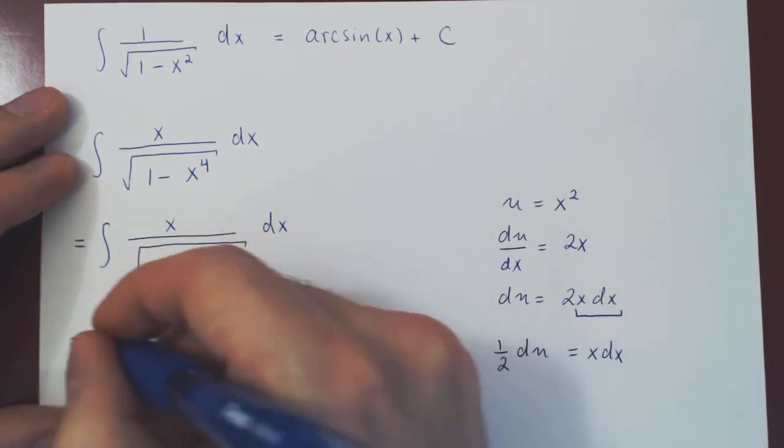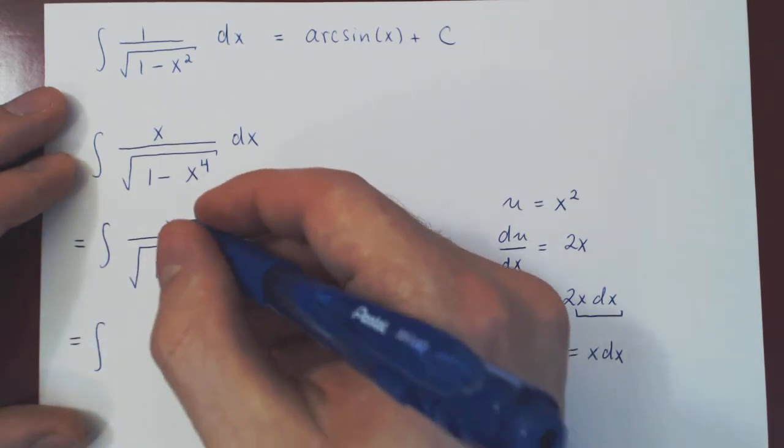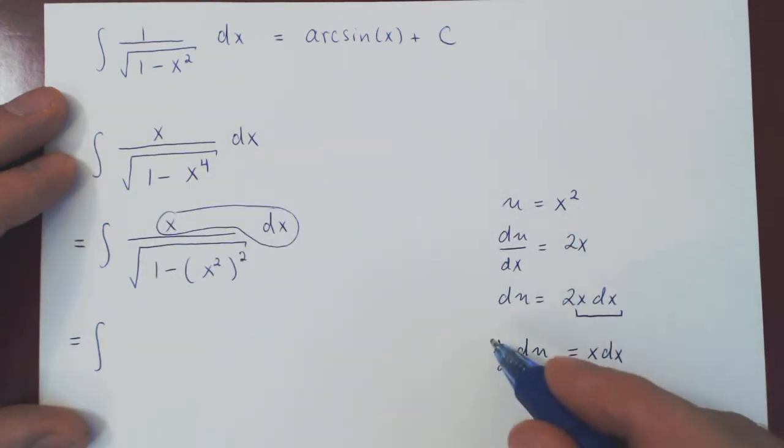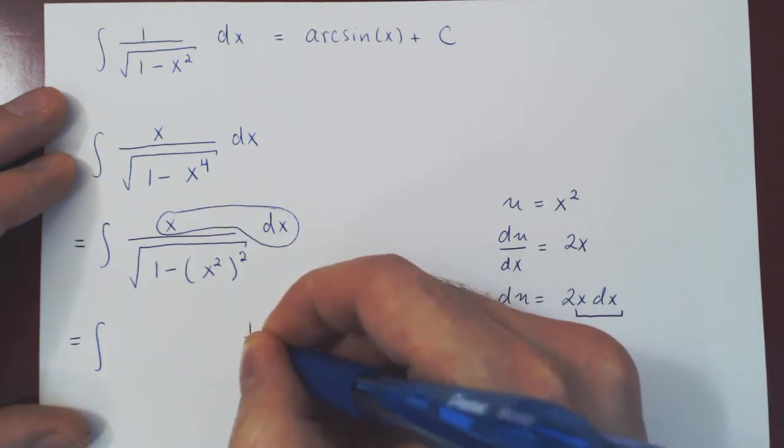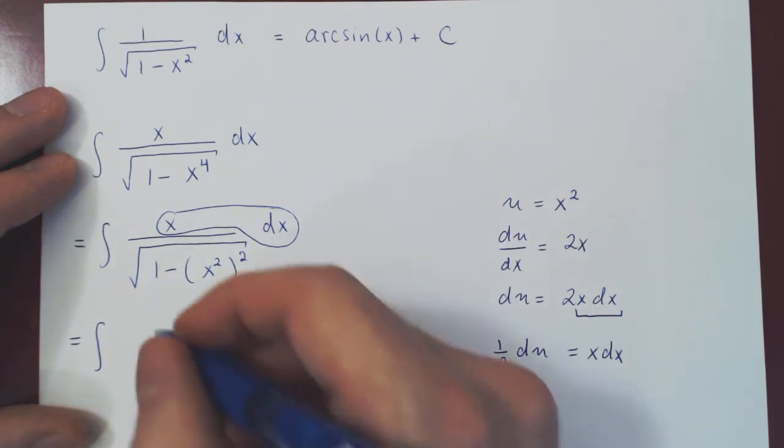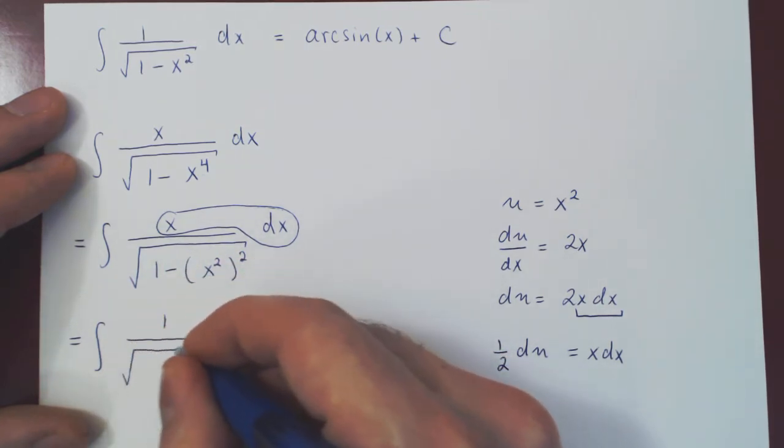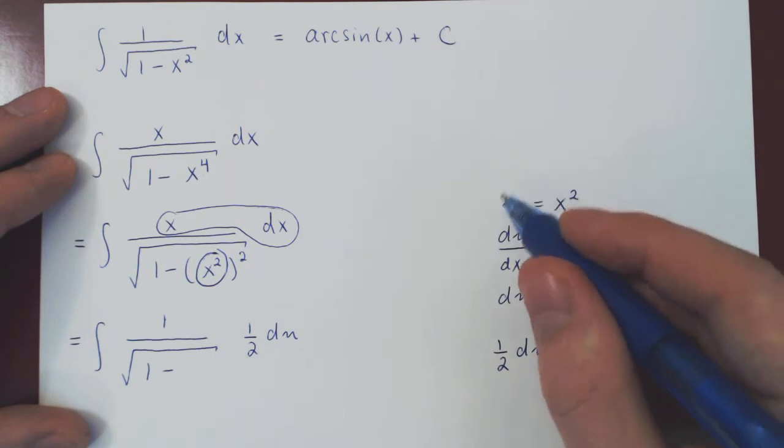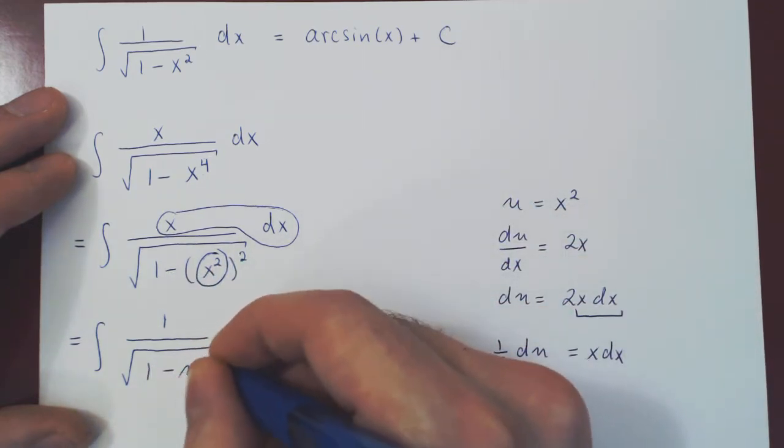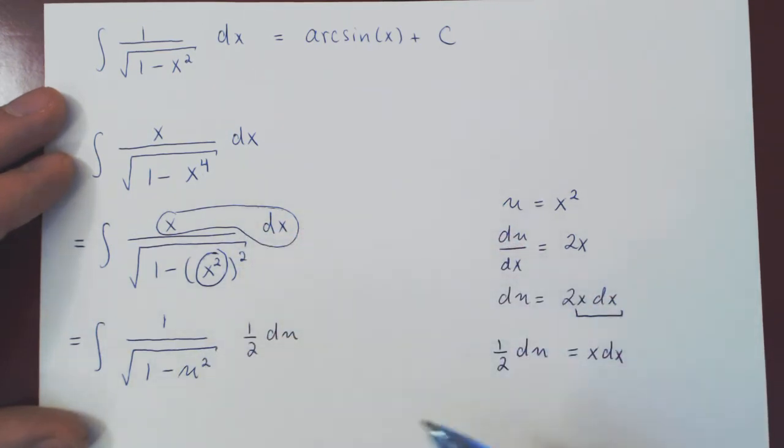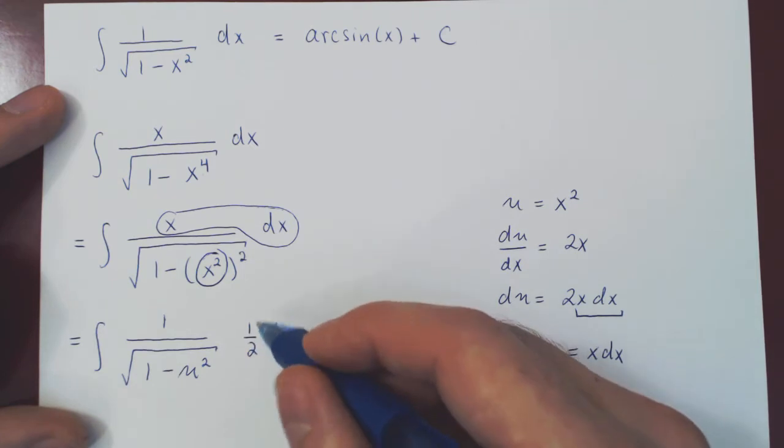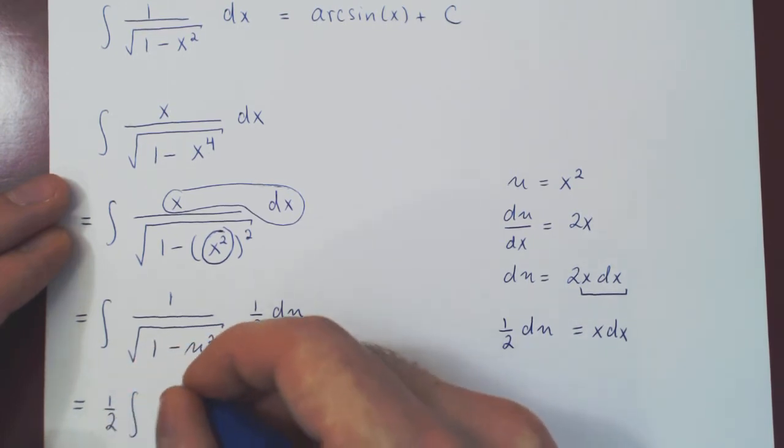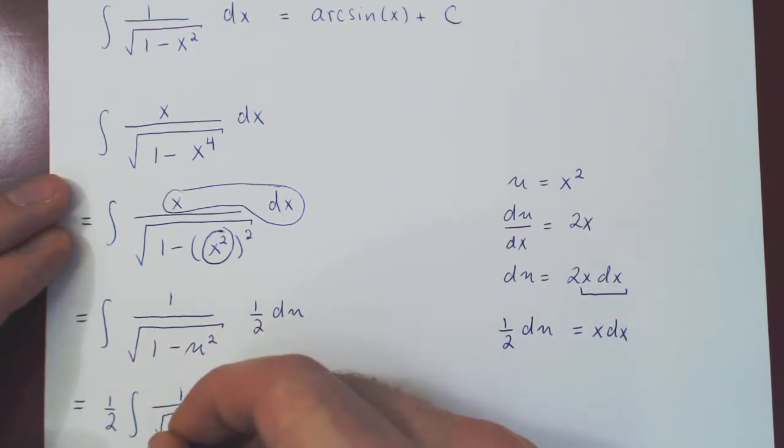And now we can replace. On the numerator, we have x dx, but x dx is just 1 half du. That leaves us with 1 over the square root of 1 minus—and now we are replacing x squared by u. So we have 1 minus u squared. And now we have the substitution, going from the integral in terms of x to in terms of u. 1 half is a scalar multiple, we can factor it out. We have 1 half integral of 1 over the square root of 1 minus u squared du.